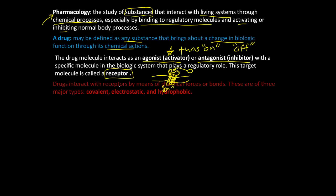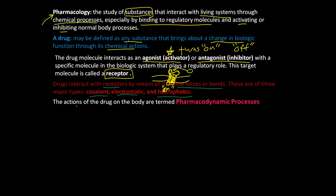Drugs interact with receptors through chemical forces or bonds. There are three major types: covalent, electrostatic, and hydrophobic. The actions of drugs on the body are termed pharmacodynamic processes — so how the actions of drugs affect the body, that's pharmacodynamic processes.